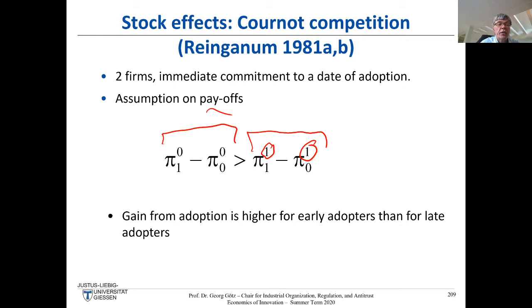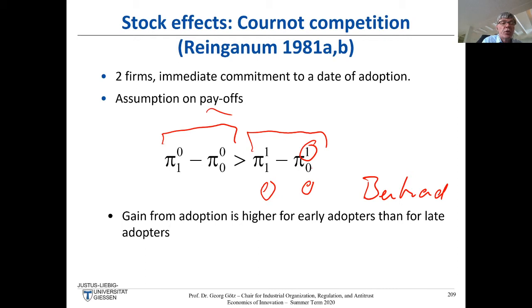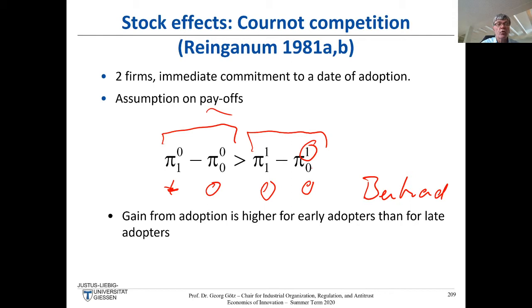In Bertrand, profit is zero when firms have the same technology. If my rival has new technology and I have old, my cost is higher and my profit is zero. If I have new and my rival old, I have lower cost and positive profit. So this first-mover profit advantage is satisfied under Cournot, and we'll have a problem in the assignments where we verify this.